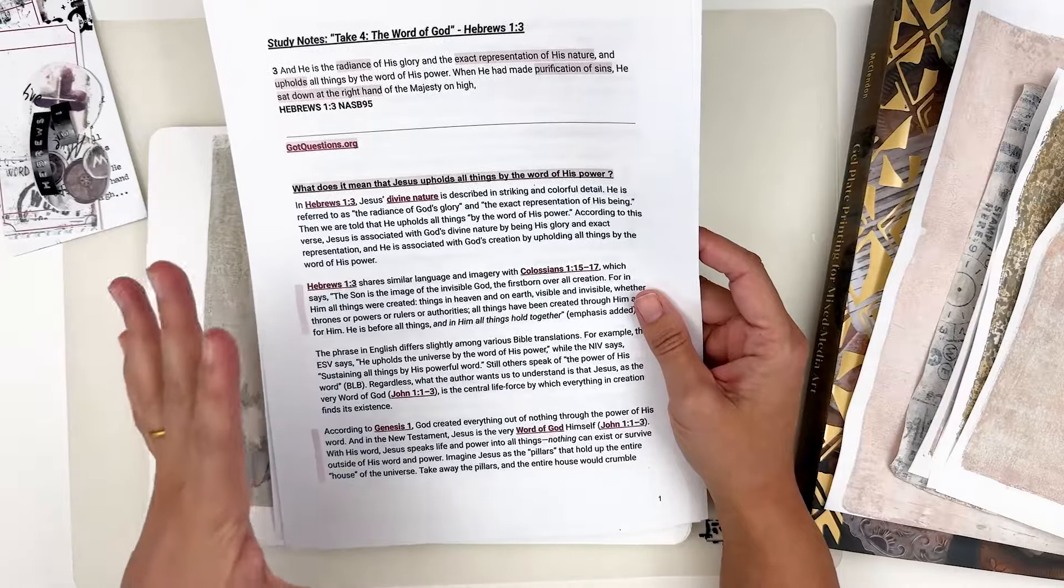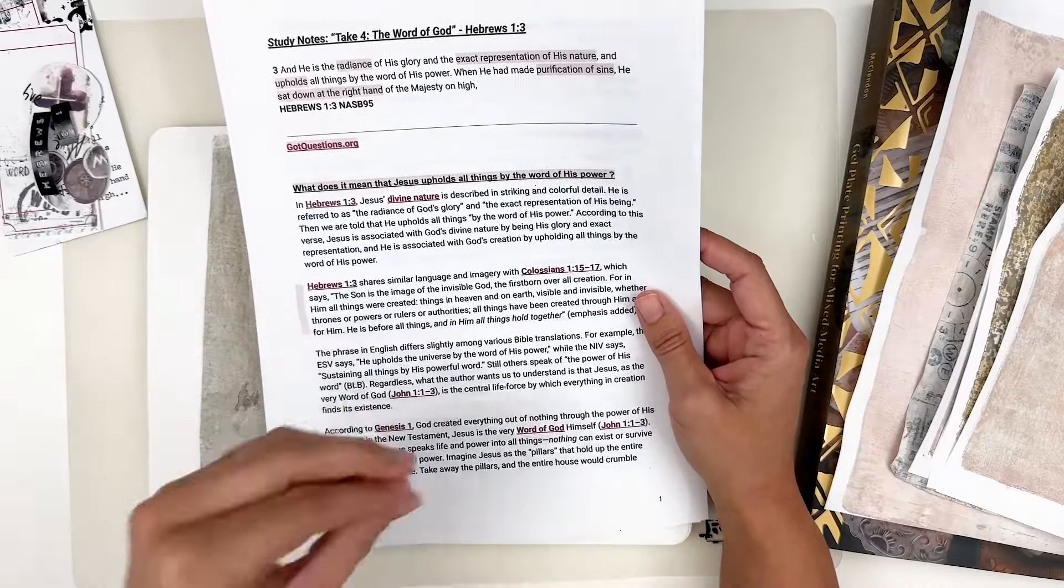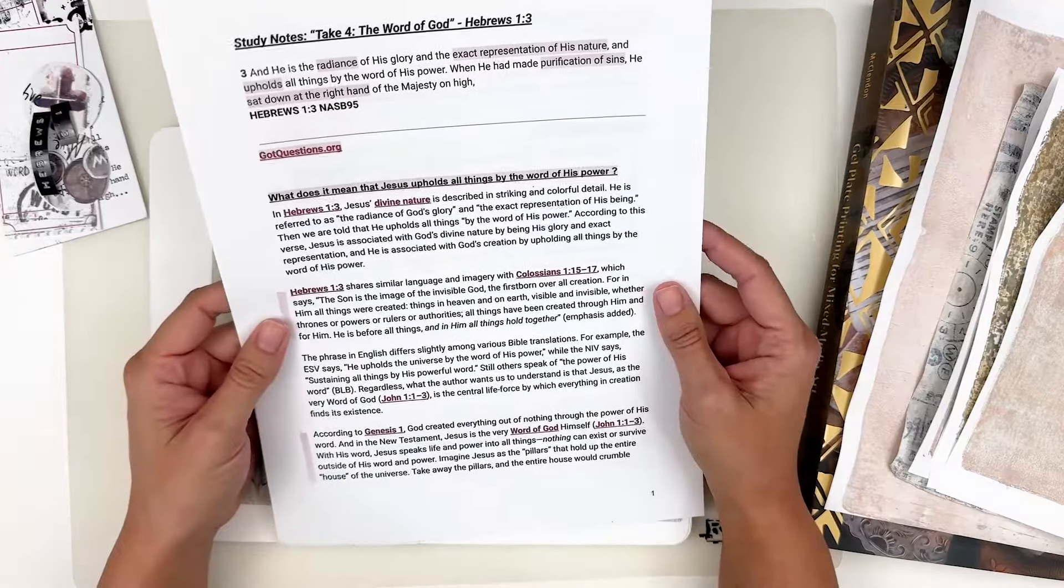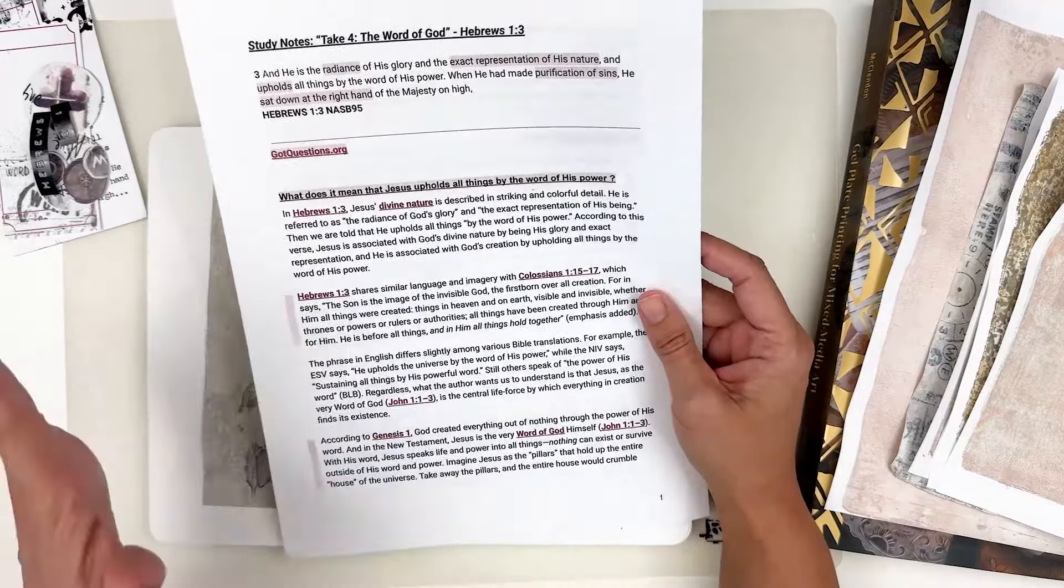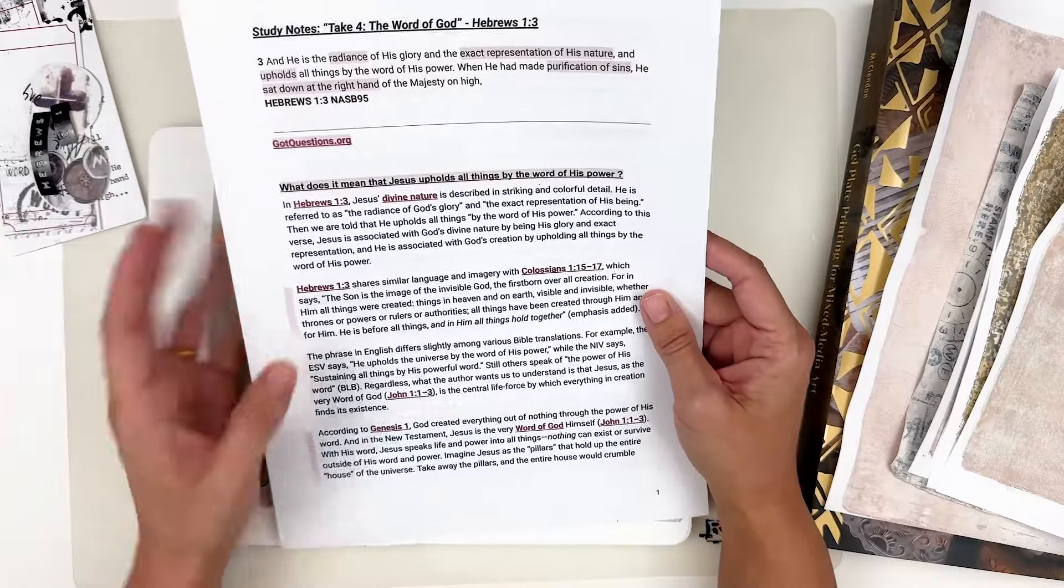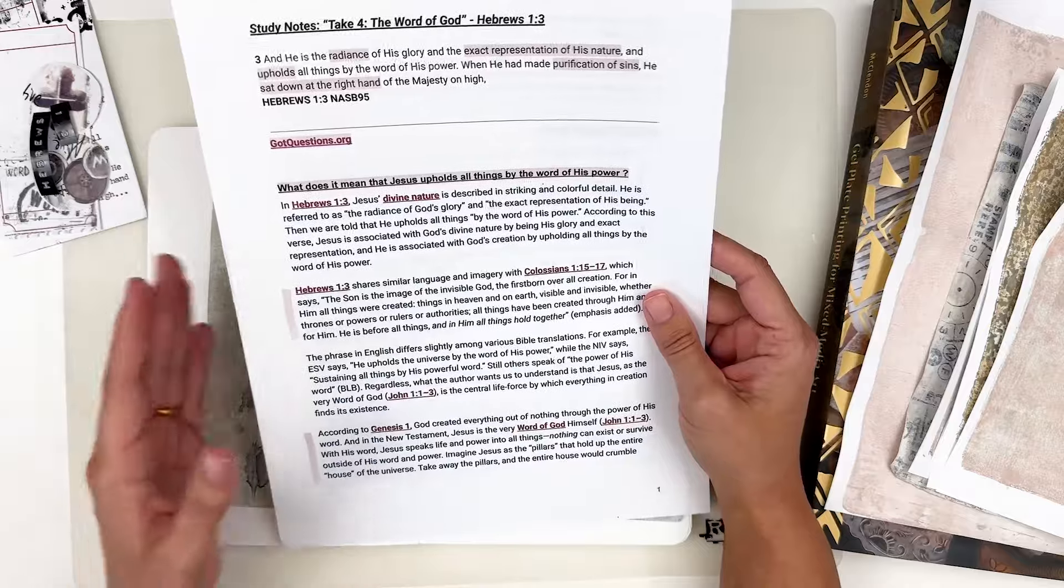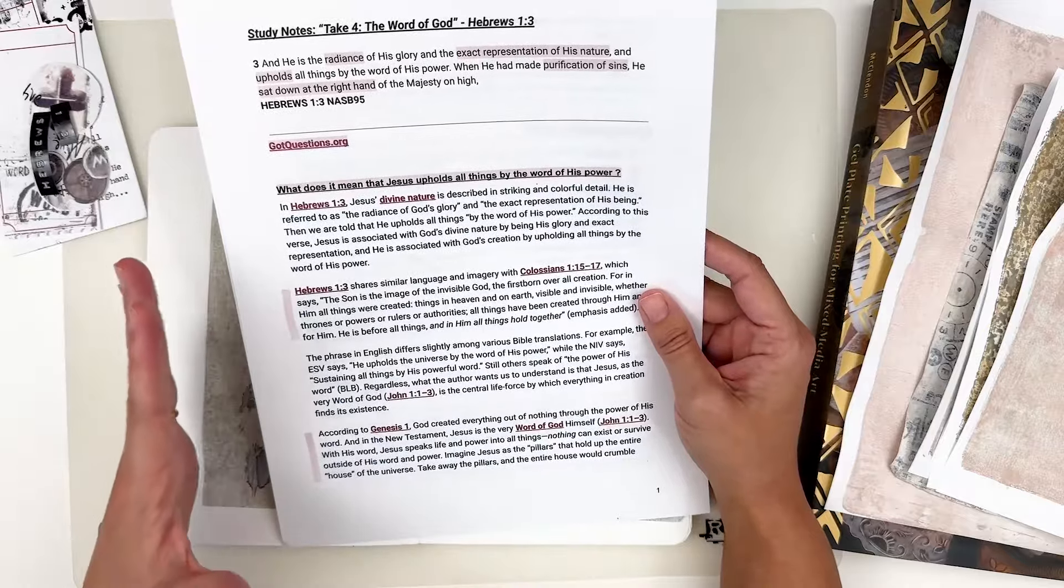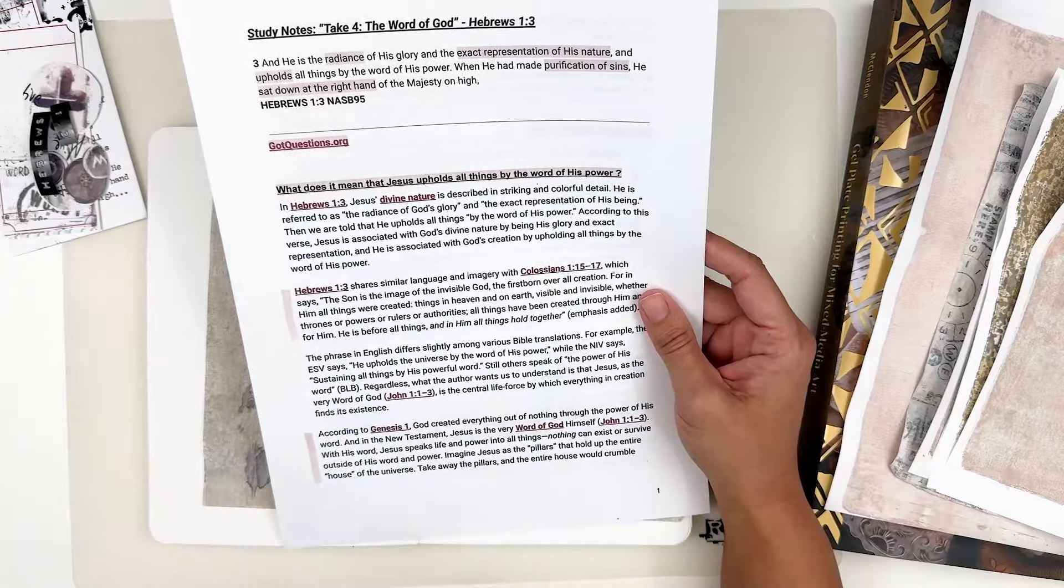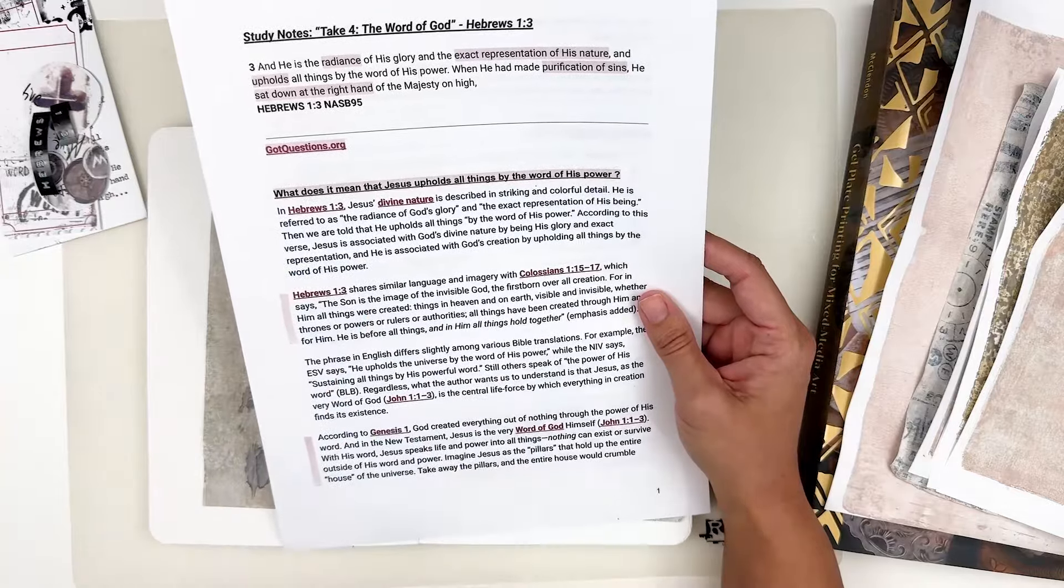Hebrews one three shares similar language and imagery with Colossians one 15 through 17, which says the sun is the image of the invisible God, the firstborn over all creation for in him, all things were created things in heaven and on earth, visible and invisible, whether thrones or powers or rulers or authorities, all things have been created through him and for him. He is before all things and in him, all things hold together. One thing I especially love about Ingrid's devotionals is just how much emphasis she puts on the importance of Jesus and his sacrifice for us.